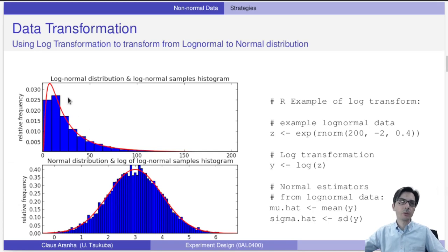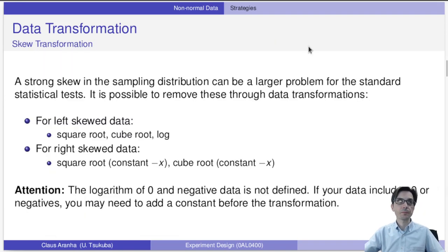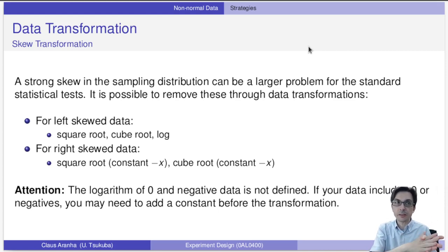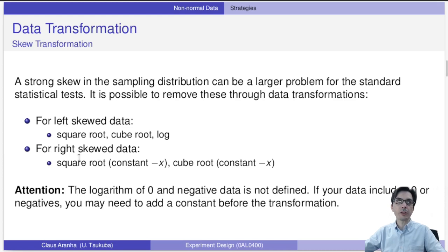For data transformation: if we have a log-normal distribution, applying a log transform will make the data normal and beautiful, and we can apply parametric tests. If the data has a strong skew in the sampling distribution, we can use the square root or cube root for left-skewed data, or square root with a minus-x constant for right-skewed data. However, the logarithm of zero or negative data is undefined, so be careful when using log transformations.